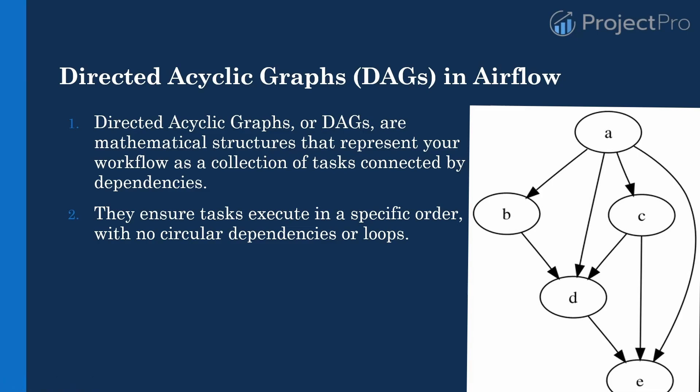There should be no circular dependencies or loops. For example, task C depends on task A, but task A does not depend on task C. If that were the case, it would be a circular or loop dependency. Once you establish any DAG with a circular dependency in Airflow, it will throw an error and not accept it as a valid DAG. Executions must only happen in a specific order.